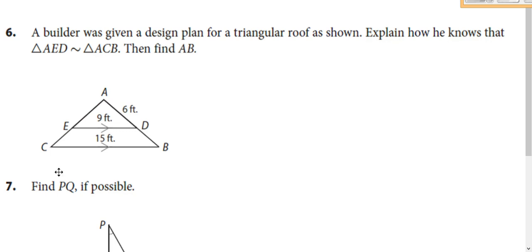A builder was given a design for a triangular roof. Explain how he knows the triangles are similar, then find AB. First, confirm similarity: ED and CB are parallel. When a transversal crosses parallel lines, the corresponding angles are congruent. The same argument applies to the two angles on the other side. Or you could use angle A at the top, which is in both triangles by the reflexive property. So they are similar because of angle-angle, which means we can write the proportion.